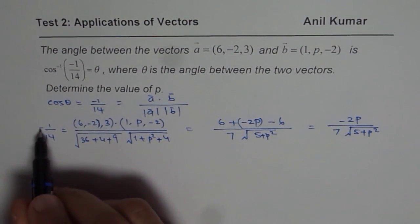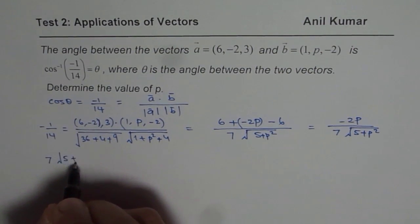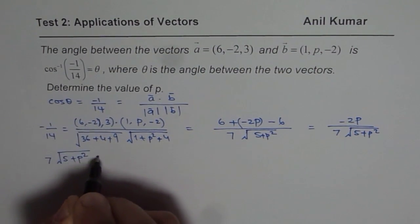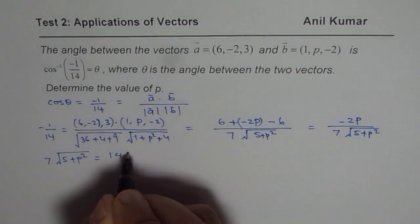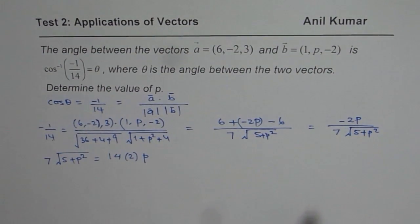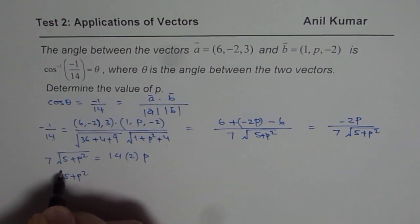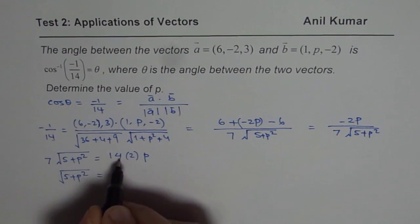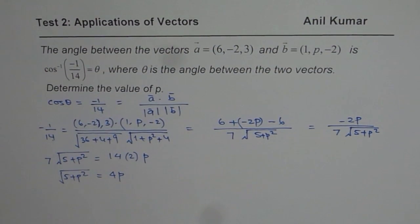So minus and minus becomes positive, we get 7 square root of 5 plus p squared on the left side equals to 14 times 2 times p. So dividing by 7, I could write 5 plus p squared equals to, if I divide this by 7, I get 4p.